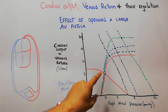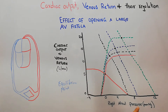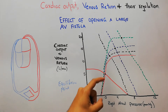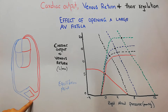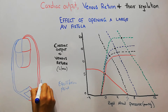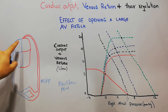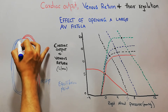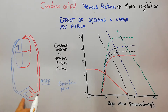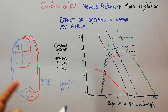This equilibrium point at five liters per minute corresponds to the normal right atrial pressure and the normal mean systemic filling pressure of seven mmHg. At seven mmHg, the venous return becomes zero because the mean systemic filling pressure is the force helping to move blood towards the heart. If the pressure in the heart also becomes seven mmHg, this force cannot push blood towards the heart, so venous return becomes zero.